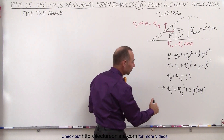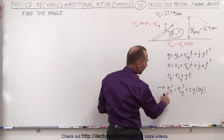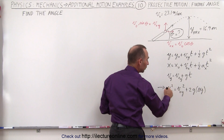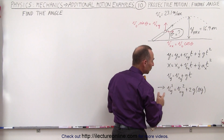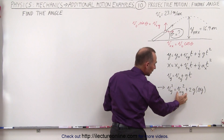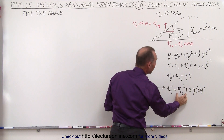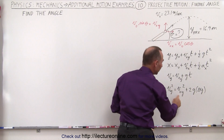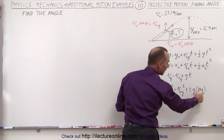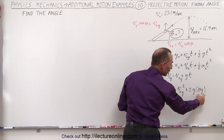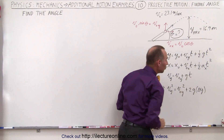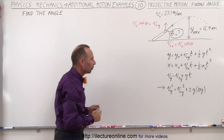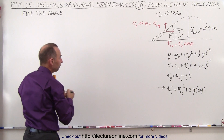The final velocity when we reach the maximum height will be equal to zero, so everything can be written in terms of the initial velocity in the y direction, g which is a known quantity, and the change in the y direction which is also a known quantity. That looks like the right equation to use, so let's start with that one.